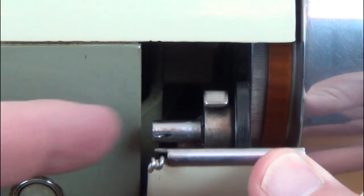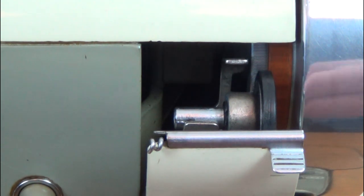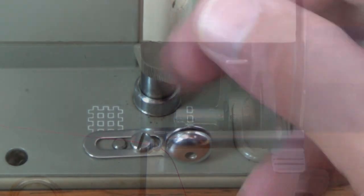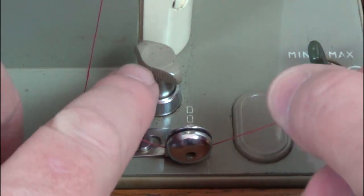The bobbin winder is hidden, but easily clips into position. The thread goes first through the pigtail on the winder, then down to the school bell style tensioner.